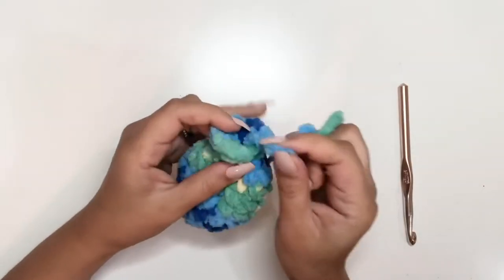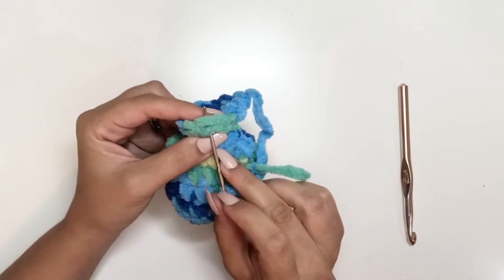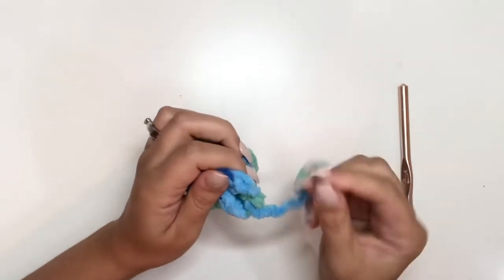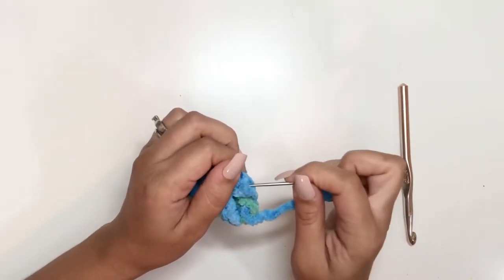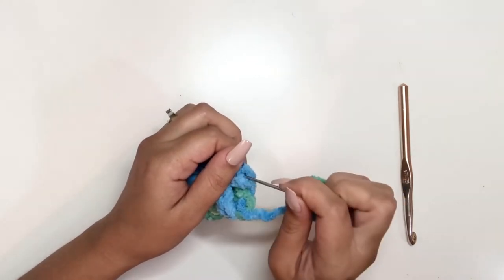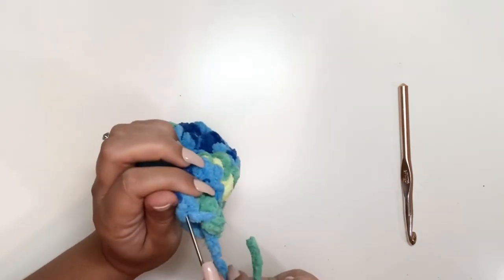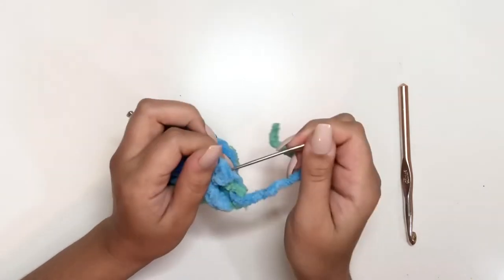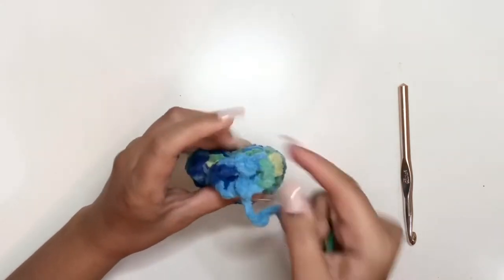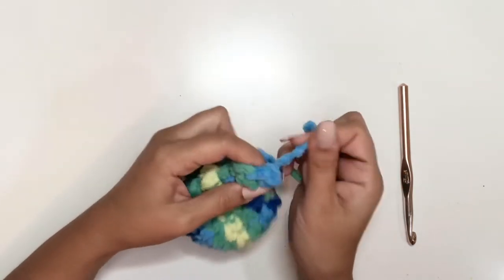To do an invisible join, you find the first stitch of your row, go underneath both of those loops, pull it, and you're going to join it into the same spot where it came out. You have two strands back here. I usually just go under both strands. I know it's kind of hard to see with this yarn, but just make sure it goes into the same stitch that it came out of.